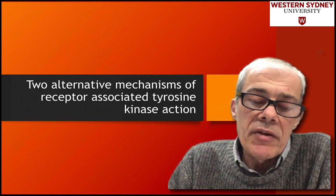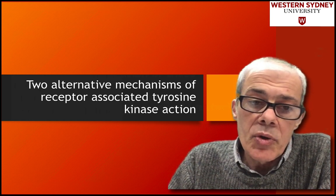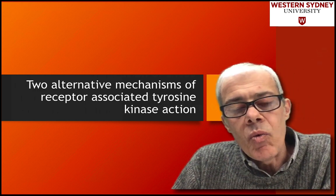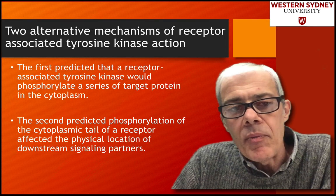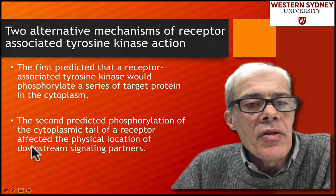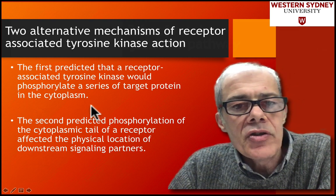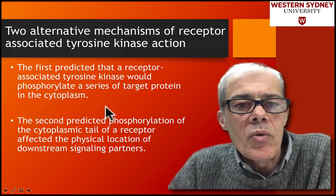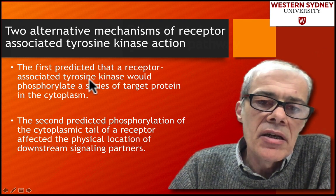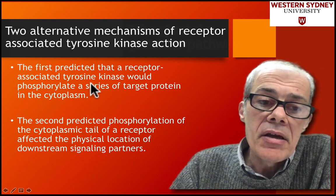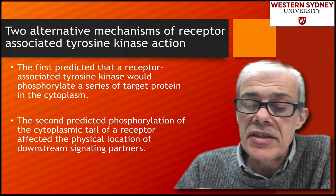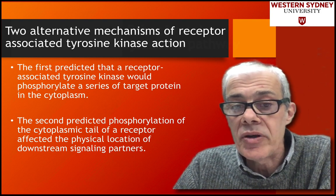We know the role of tyrosine phosphorylation at the receptor is important. The question is: what is the mechanism whereby you trigger signaling from the receptor? There were two schools of thought. The first school of thought was that once you activate the tyrosine kinase at the receptor, it would simply phosphorylate a whole bunch of target proteins in the cytosol, and that seemed the most plausible thing that would occur.